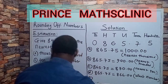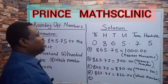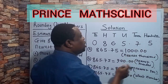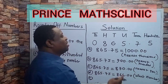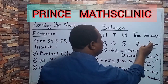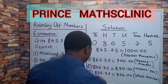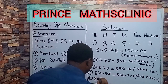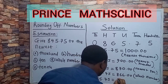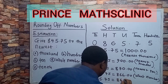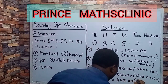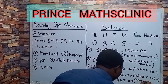Lastly, E: nearest tenth. This is the tenths place, meaning 1 over 10. The number after tenths is 5 — convert it to 1 and add it to the tenths digit. So 865.75 becomes 865.80. This is the nearest tenth.